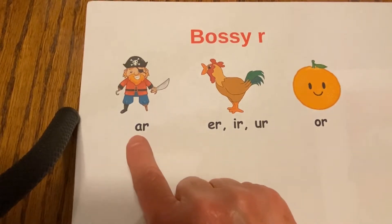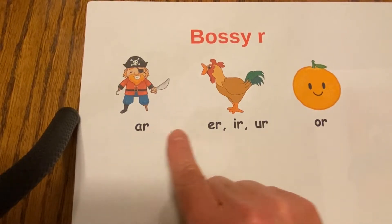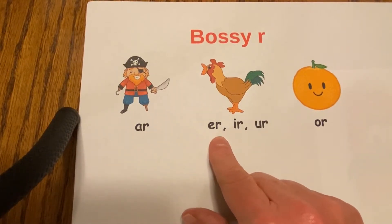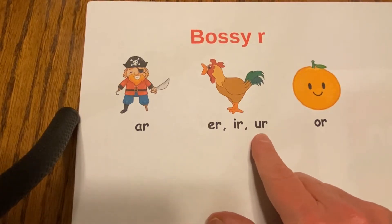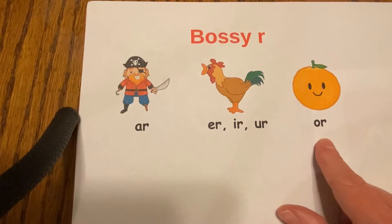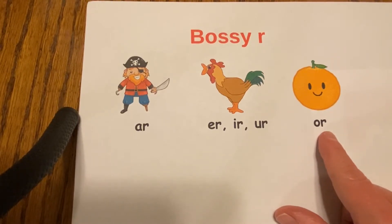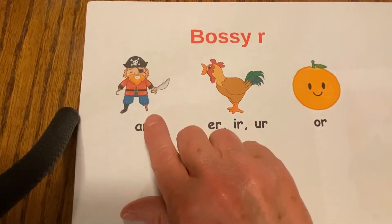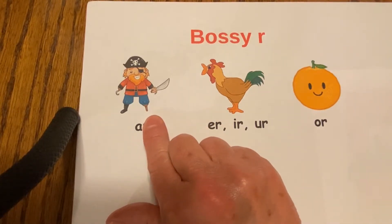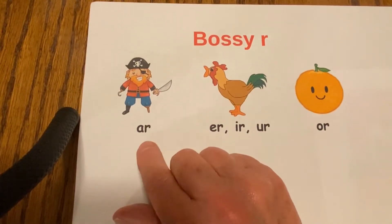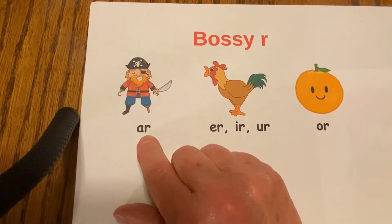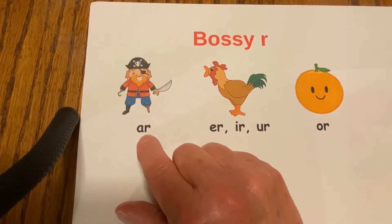We have the A with the R, the E with the R, the I with the R, the U with the R, and the O with the R. So it's always a vowel in front of the R. Now normally the A's short sound is 'a', but when it gets coupled up with the bossy R, it makes the R sound — kind of like what a pirate would say.